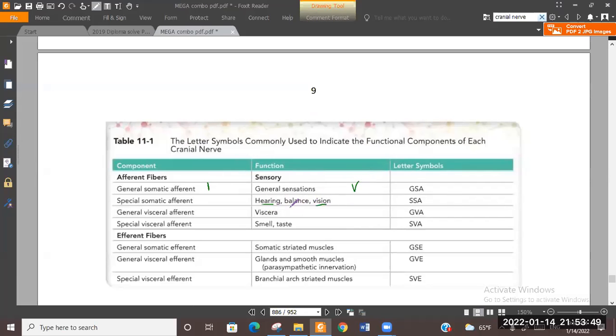9 and 10 have taste sensation. Special visceral afferent includes olfaction - smell and taste are special visceral afferent. 1 and 7, 9, 10 control taste. 1, 7, 9, 10 have special visceral afferent. So those all have special visceral afferent. General somatic afferent includes 3, 4, 6, 12 as somatic efferent.